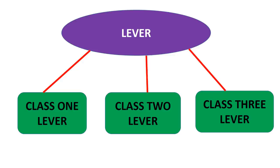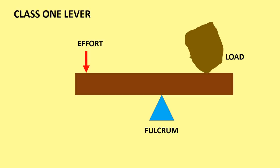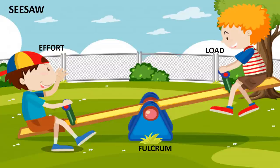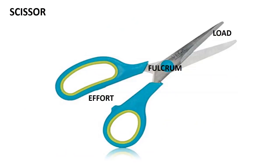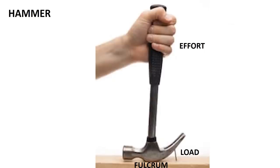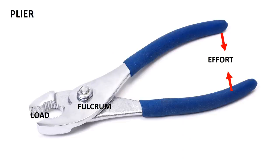There are three lever classes. Class 1 lever: In this class, the fulcrum is between the effort and the load. The mechanical advantage is more if the load is closer to the fulcrum. Examples of class 1 levers are seesaws, boat oars, scissors, hammer, and pliers.